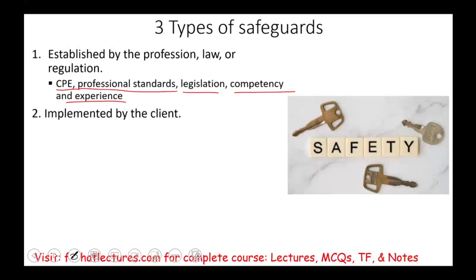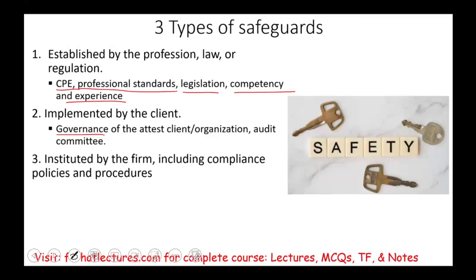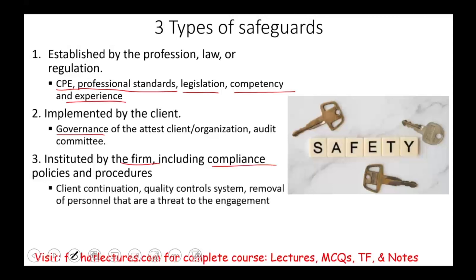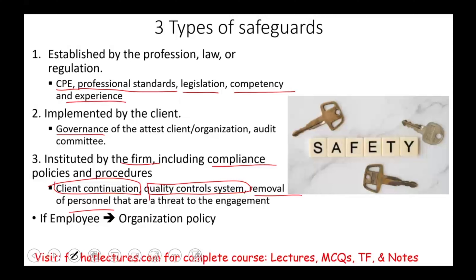Sometimes what you do is rely on client safeguards. For example, the client might have a good governance system — they might have an audit committee where you can go back and report that management is putting pressure on you. They might have their own internal safeguards. Or you might have your own safeguards at your firm, including compliance policies and procedures such as a client continuation policy — where every year you assess whether to keep a client. If you cannot deal with the threat, just let them go. You could also have a quality control system within the firm, remove personnel who are a threat to the engagement, and if you are a CPA employee working for a company, you could rely on the organization's internal control policy.